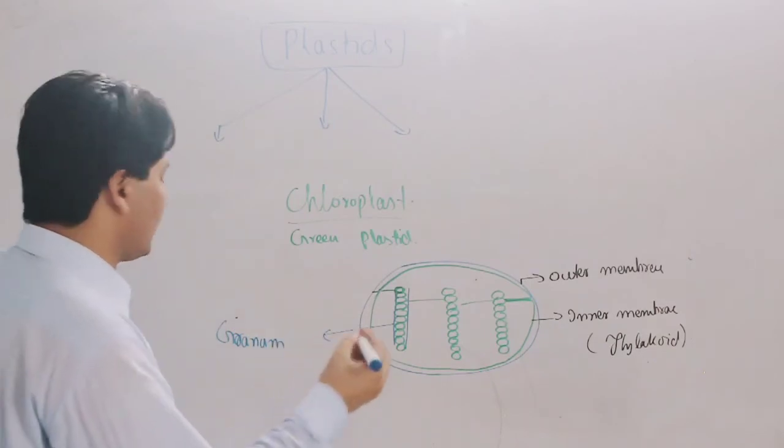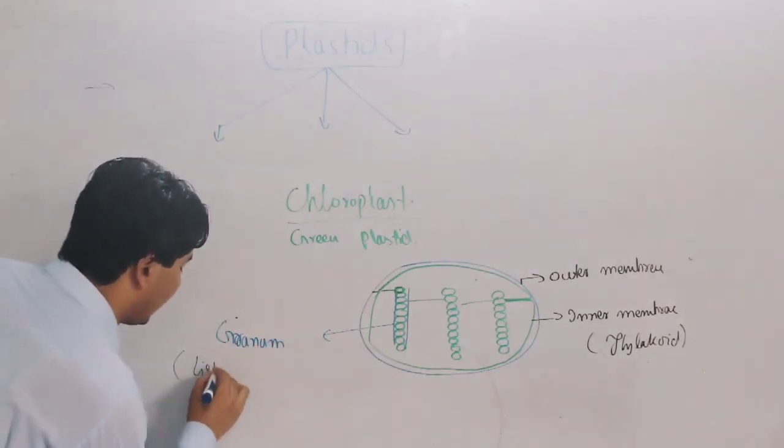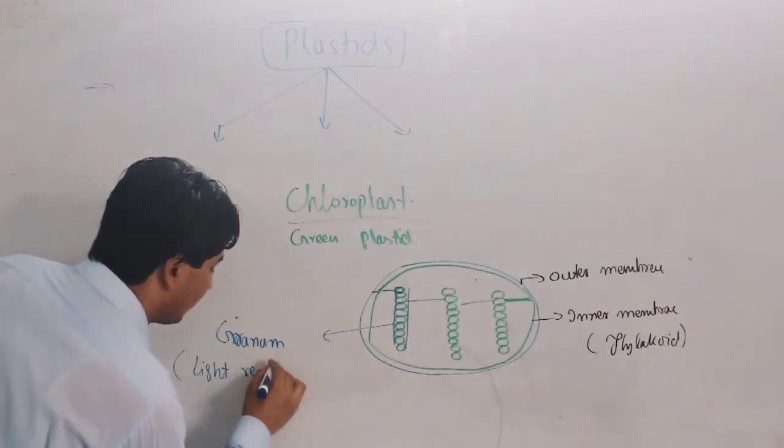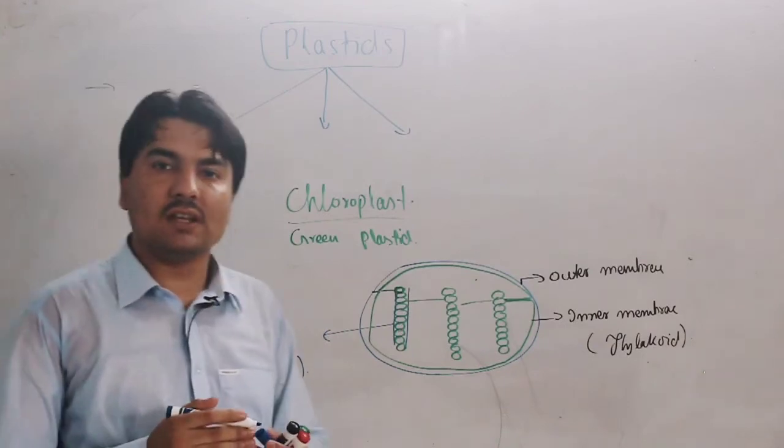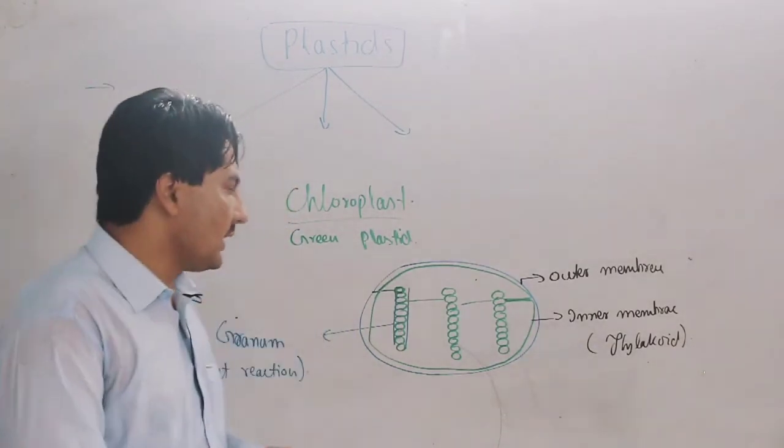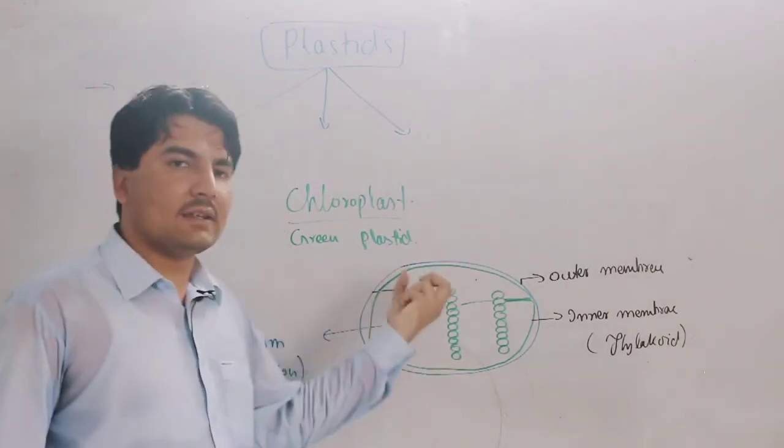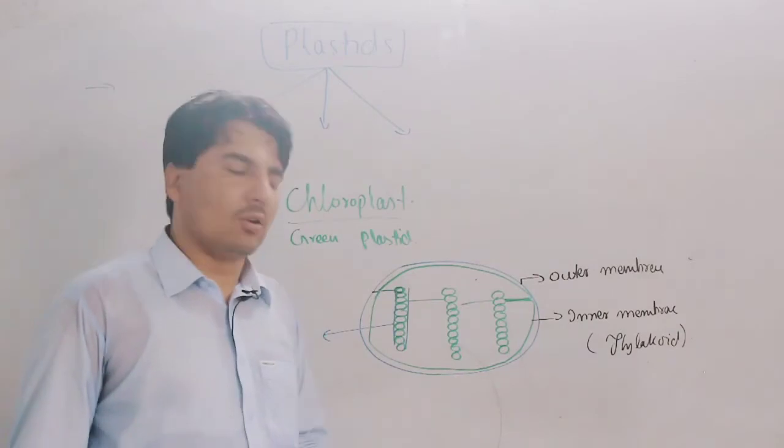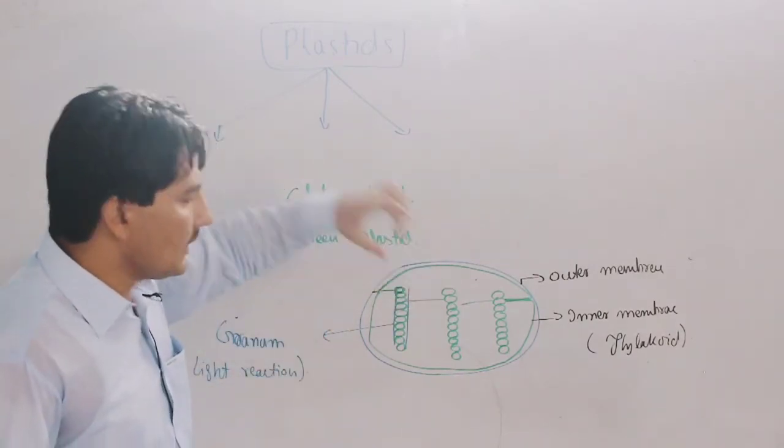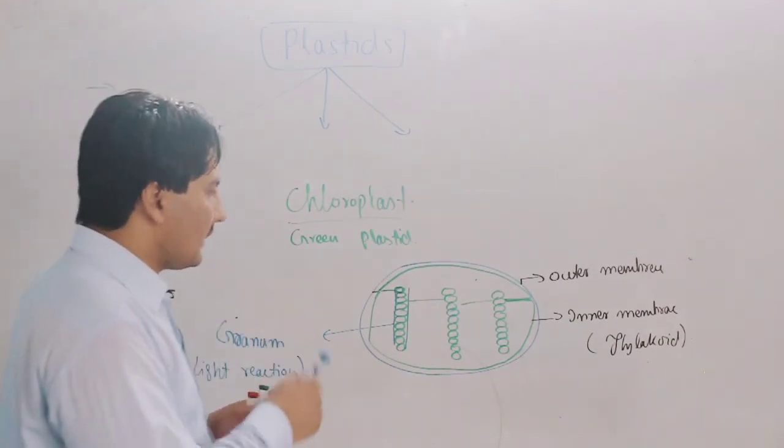The photosynthetic light reaction of photosynthesis occurs here in the granum. So it is the site of the light reaction. This is where chlorophyll is present, and chlorophyll absorbs light, which is why we see it as green.